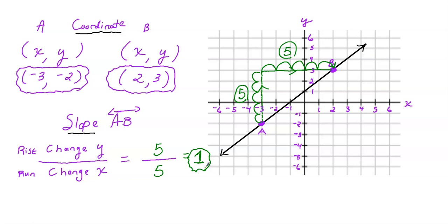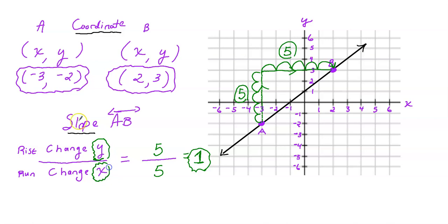So don't get these two confused. The coordinate indicates direction — it's x comma y. The slope is kind of backwards: it's change of y over change of x. Make sure you see the difference between those two — it will save you some big headaches when you're taking a math test.